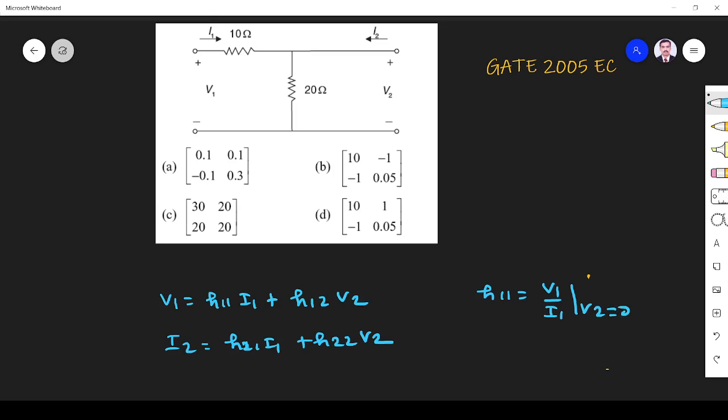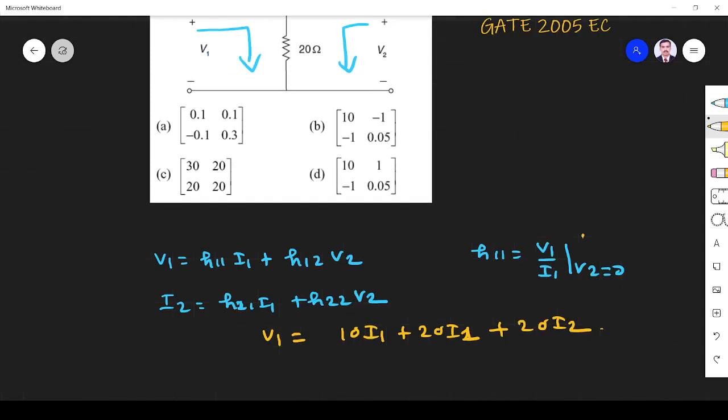Before finding the answer, let me apply KVL to the input loop and output loop and write the KVL equations. For the input side, v1 equals 10 i1 plus 20 i2.